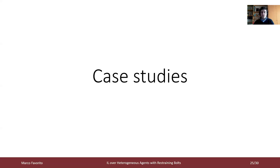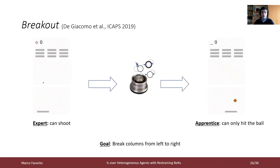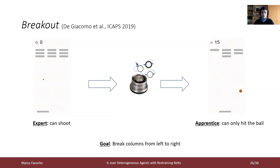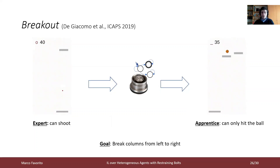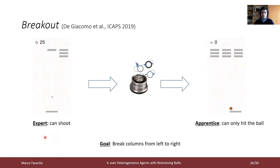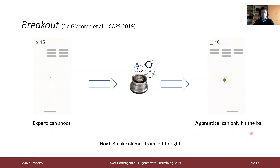Now we will see some case studies to show the usefulness of the approach. In the first example, we used Breakout as a learning environment. The task consists in breaking the columns from left to right. The fluents describe the state of each column. The expert agent is able to shoot in order to break the columns, while the apprentice agent can only use the ball.